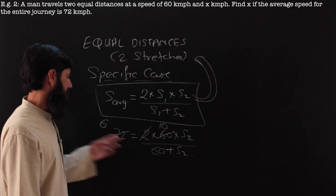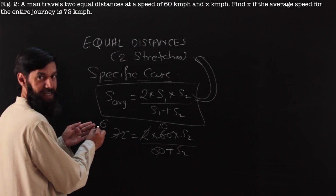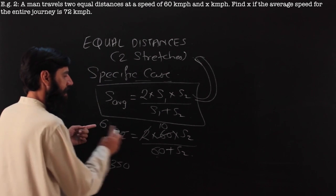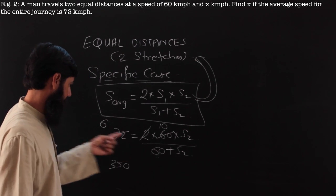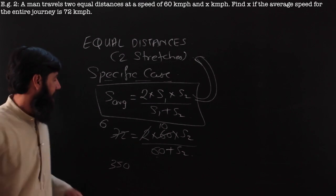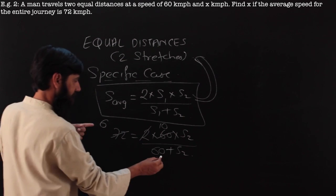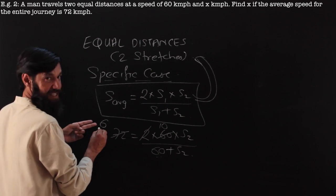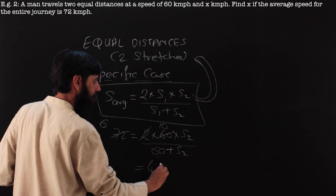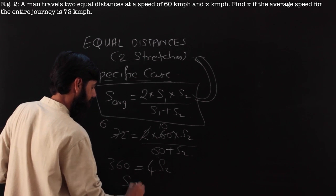Let us just cross multiply. 360, there is a multiplication. This is 360 plus 6s2. There is a 10s2 here. That is going to be 4s2 is 360. So s2 is 90.